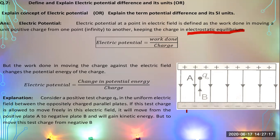Consider two points A and B — potential at B and potential at A. There are two parallel plates: one is positively charged and the other is negatively charged. These two parallel plates have an electric field, and the direction of electric lines of force is from the positive plate to the negative plate.